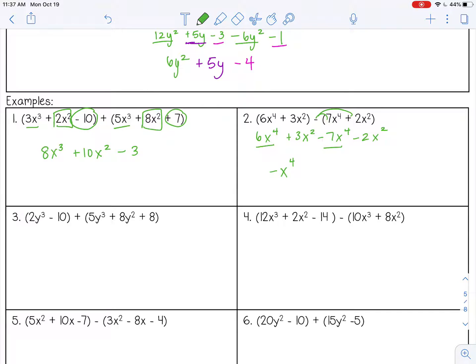And then I have positive 3x squared minus 2x squared. So 3 minus 2, that's 1x squared. Again, you don't have to write the 1. You can just write plus x squared.